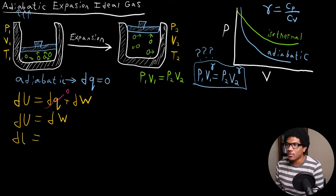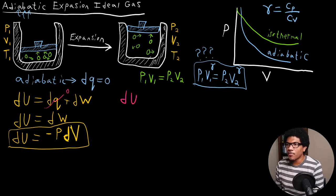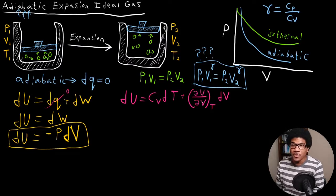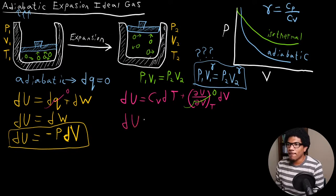Since we're looking at a gas volume change, we're looking at PV work, so that's going to be negative PDV, assuming mechanical equilibrium. This gives us one expression for DU: negative PDV. We also have another expression for DU from the total derivative: DU equals CvDT plus (∂U/∂V)_T DV. For an ideal gas, the internal pressure term is zero, so we end up with DU equal to CvDT.